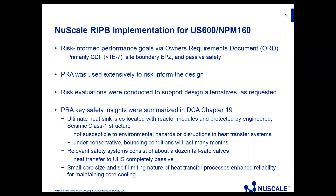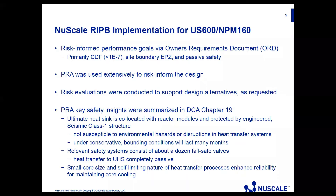In the US600 design, some of the risk-informed areas we looked at: we set performance goals in our owner's requirement document based on EPRI's utility requirement document. We had a goal of a core damage frequency of less than 1E-7, and we strived to meet a site boundary emergency planning zone. We incorporated passive safety in all of our safety-related systems. The PRA was extensively used to inform the design and evaluate various design alternatives.